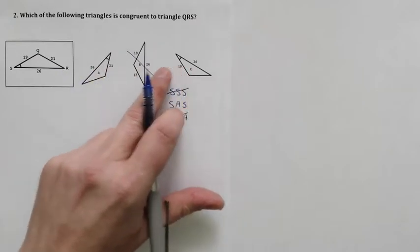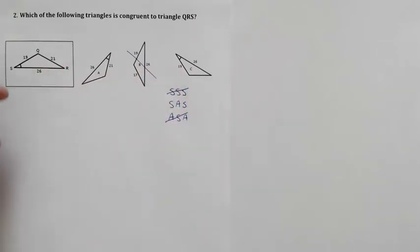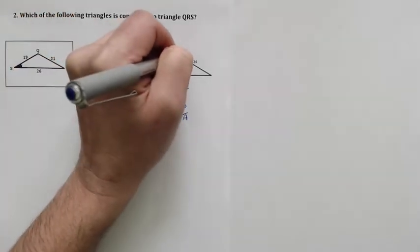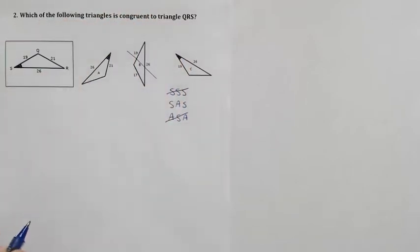Take a look at that angle that you know, angle S over here. You can see it over here as well, and you can see it over here on this one. You can see that S is made up of a 19 and a 26, so angle S is formed by the two sides 26 and 19.